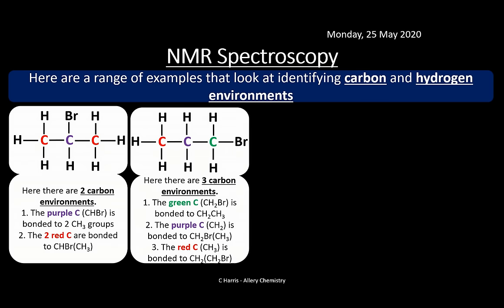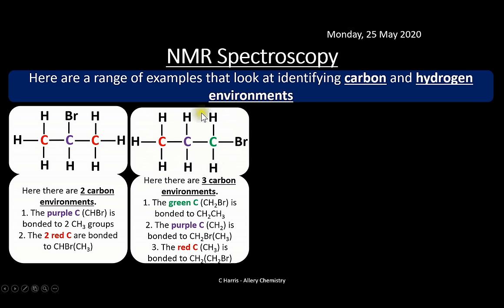Moving the bromine from the middle to the end completely changes the NMR. Now we have three different carbon environments instead of two. The end carbon bonded directly to bromine is unique; the middle carbon is bonded to a CH₃ on one side and a CH₂Br on the other; and the CH₃ carbon is bonded to CH₂ and CH₂Br. None of them see the same scene, so there are three distinct environments.